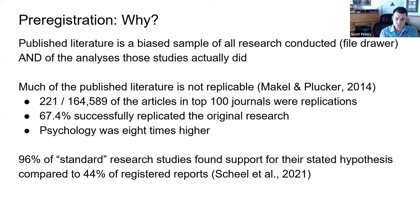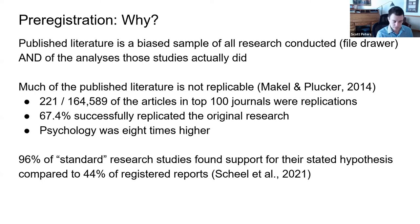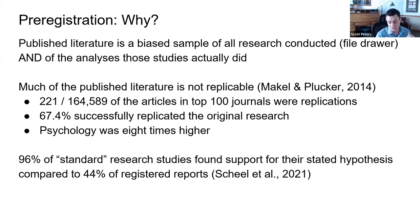67% of those replications were successful. If we generalize that across the full 164,000 studies, a large number would not be replicable — which doesn't mean those studies were wrong, fraudulent, or flawed, just that replications wouldn't have been successful. Education is newer to the open science world; psychology is maybe five to ten years ahead of us.